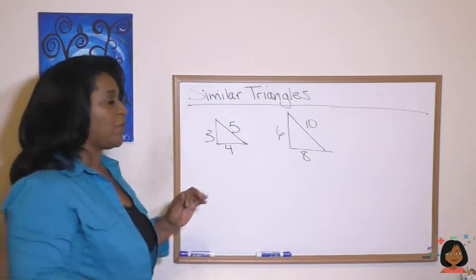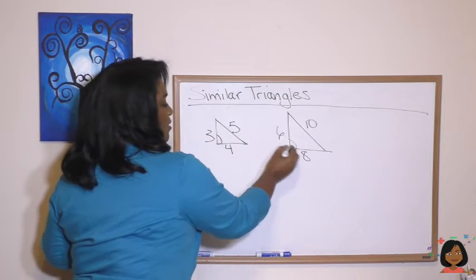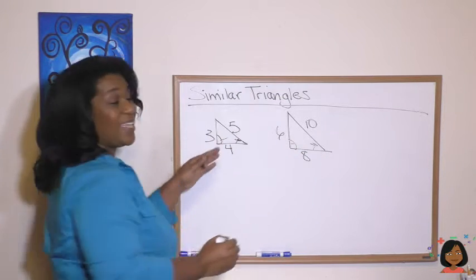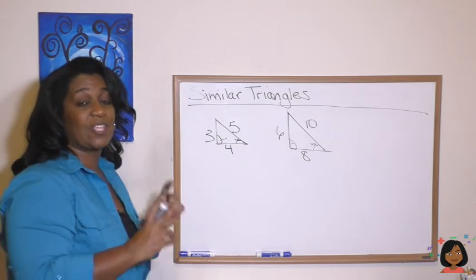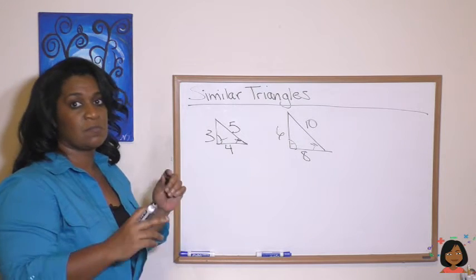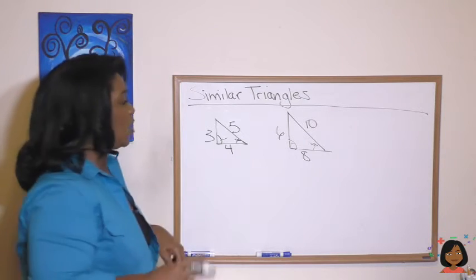So what do I mean by they have sides that are proportional? Well, here's two similar triangles. Okay, same angles, but the sides are different. But if we look at the corresponding sides of each of the triangles, we're going to see that they form a ratio. Watch.